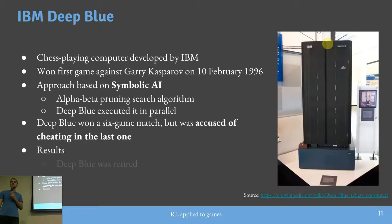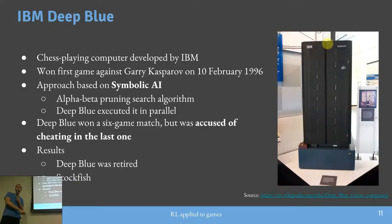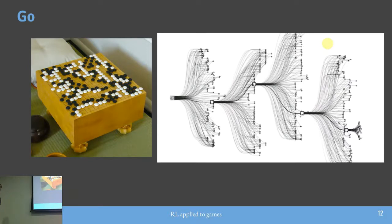Depois do Deep Blue, surgiram outras engines. A mais popular de xadrez é o Stockfish, conhecida hoje como um dos principais algoritmos de inteligência artificial para jogos. E aí a gente entra no jogo do Go, que está bastante famoso recentemente porque se construiu uma inteligência artificial para resolvê-lo. O Go tem regras muito mais simples do que o xadrez, mas a cada turno um jogador coloca uma pedrinha e o objetivo é cercar o adversário.